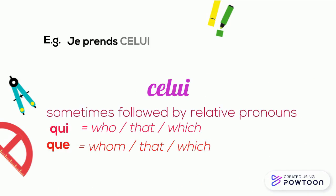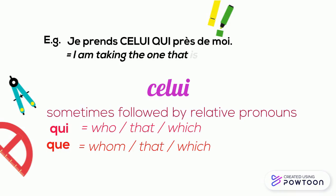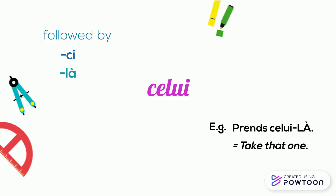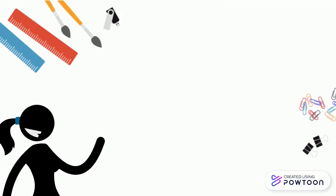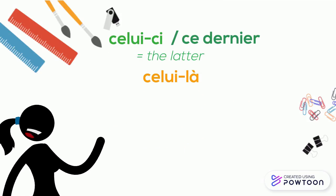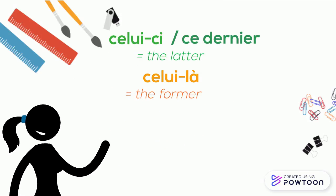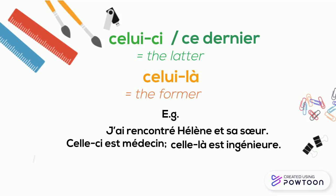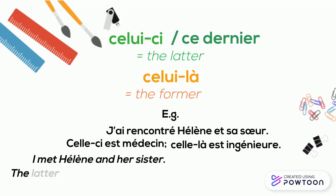For instance, 'je prends celui qui est près de moi' (I'm taking the one that is near me). 'Celui' can also be followed by '-ci' or '-là' — for instance, 'prends celui-là' (take that one). 'Celui-ci' or 'ce dernier' means 'the latter,' whereas 'celui-là' means 'the former.' For example: 'j'ai rencontré Hélène et sa sœur. Celle-ci est médecin. Celle-là est ingénieur.' — I met Hélène and her sister. The latter is a doctor. The former is an engineer.